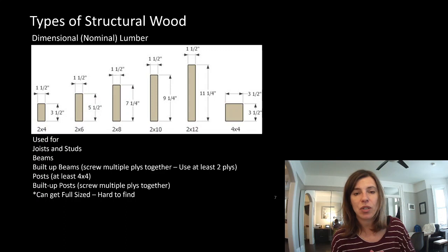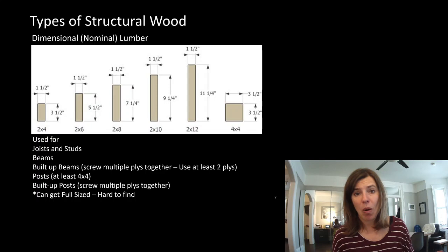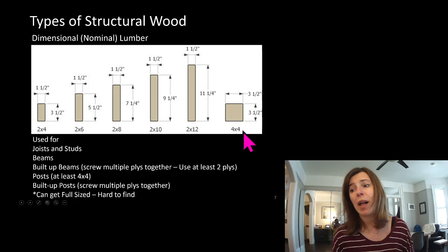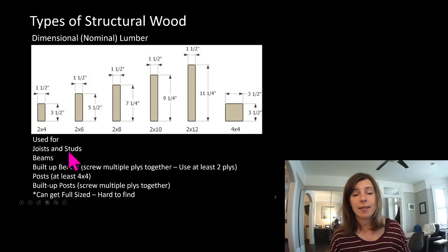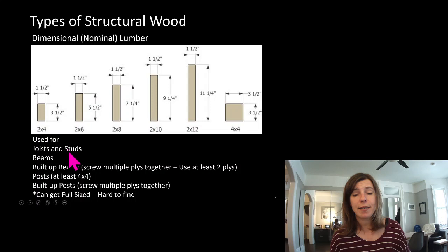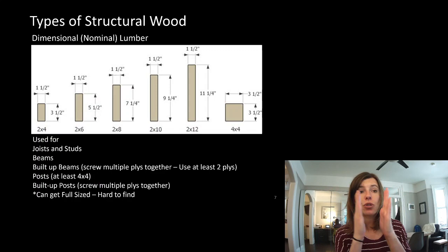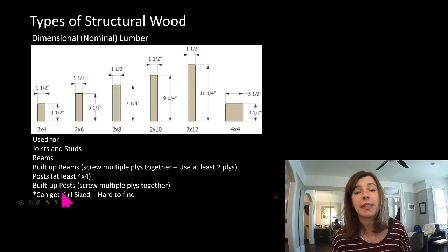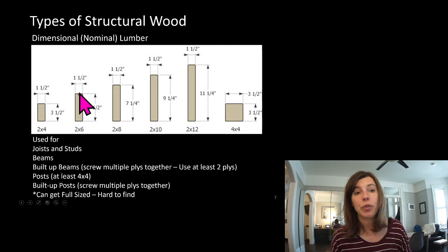This is stuff I've shown you in the past, but I'm going to give a quick refresher because I know there are five or six students that weren't in Structures 1. Here's a quick refresher on dimensional or nominal lumber — our two by fours, two by sixes, two by eights, two by tens, two by twelves, four by fours, maybe even a six by six. This is what we use for joists and studs in a building; we might use it as a beam, or often we'll make built-up beams where we take a few plies and screw them together. Posts are when we're using it as a column — at least a four by four — or we'll do a built-up post where we take maybe two two-by-fours or two-by-sixes or more and screw them together.